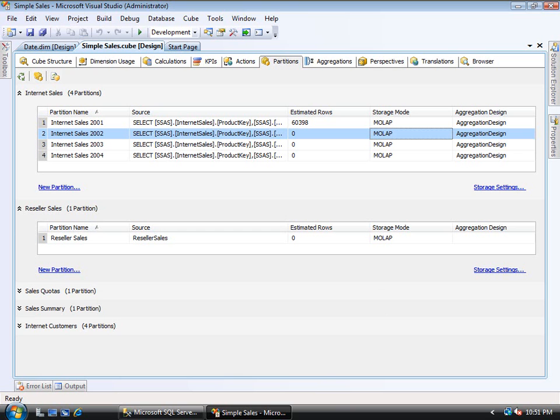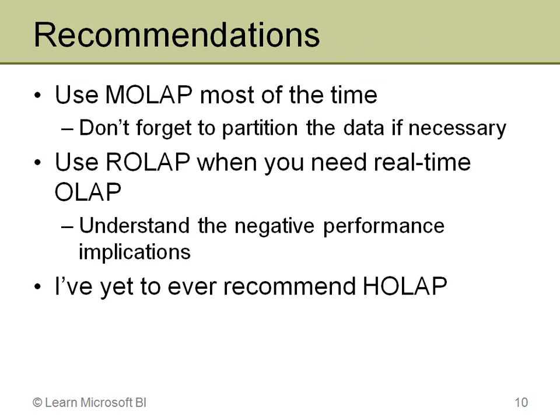To summarize the options: ROLAP is the slowest but supports real-time; MOLAP performs best but isn't real-time; and HOLAP is in the middle. The recommendation is to use MOLAP most of the time — it meets most companies' needs. If the MOLAP structure is going to be very large, partition your data. Use ROLAP only when you truly need real-time OLAP, keeping in mind there are significant negative performance implications.